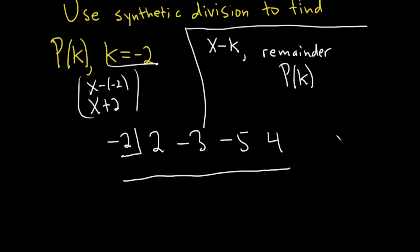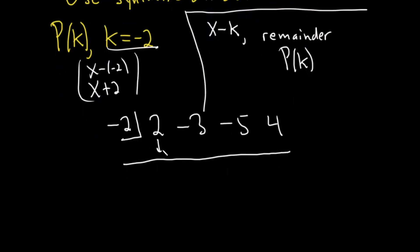For synthetic division, the first thing you do is bring the number down, so 2. Then you multiply: 2 times negative 2, that's negative 4. Then you add: negative 3 plus negative 4 is negative 7.